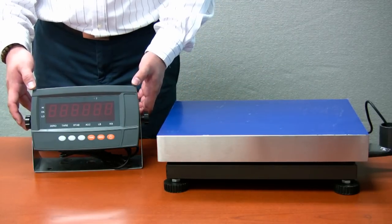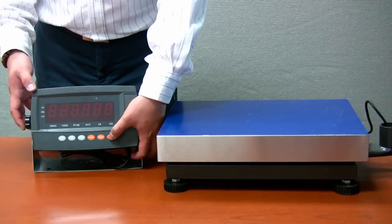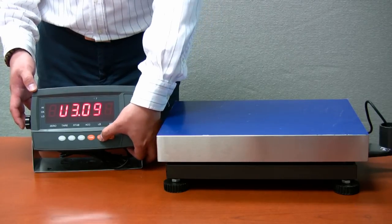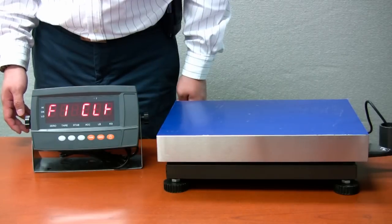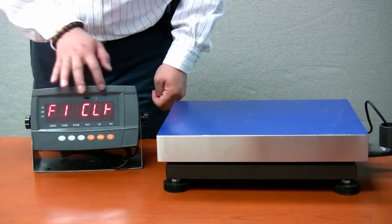When the scale is off, press the power key, then press zero key immediately. The scale will enter parameter setting mode starting from F1 CLK.